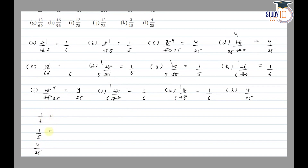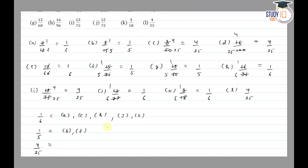Checking which fractions are equivalent: for 1/6, the group is a, e, h, j, and k. For 1/5, the group is b, f, and g. And for 4/25, the group is d, i, and l. So that is our final answer. Thank you.